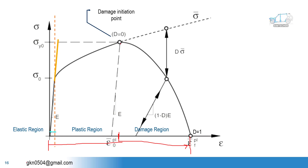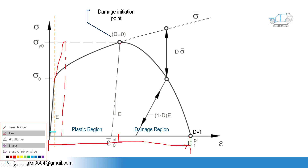If you have a brittle material, the stress-strain curve goes like that and then sudden failure will occur. This is my brittle case. But here we have the ductile case.